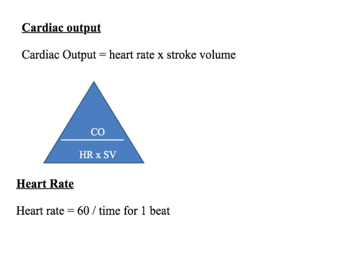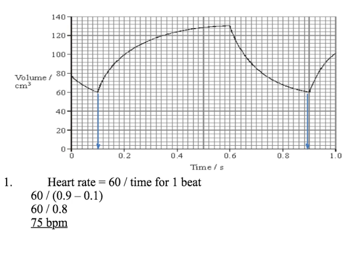You might need to do a two-part calculation. You might need to work out the heart rate individually. Heart rate can be calculated as 60 — because there are 60 seconds in a minute — divided by the time in seconds for one beat. This graph has enough information to work out the cardiac output, starting with the heart rate using the formula 60 divided by the time taken for one beat.